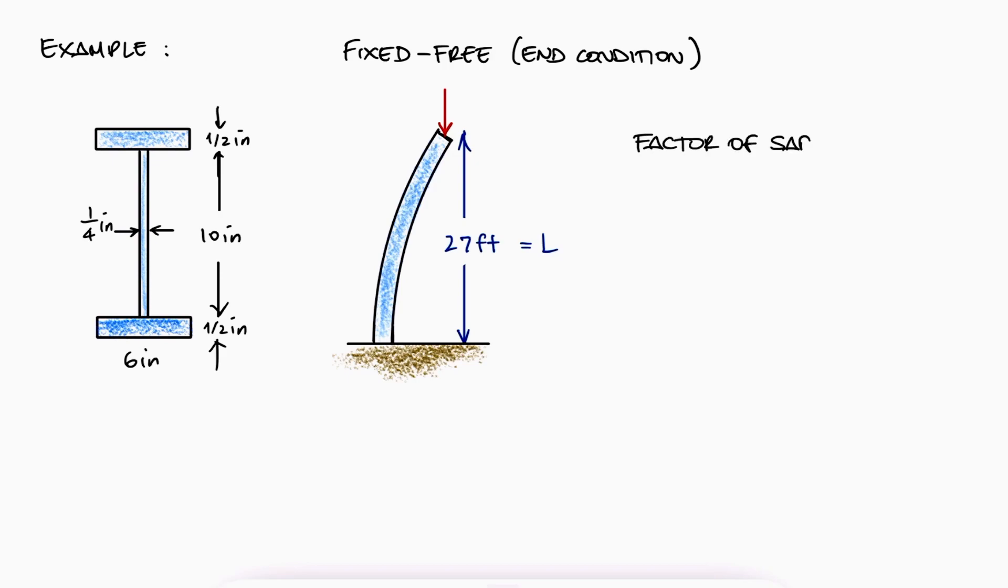Using a factor of safety of 2.8, what is the allowable centric load P that can be applied to the column? Use 29 times 10 to the 6 psi for the elastic modulus. Remember to try this problem on your own before watching the solution up next.